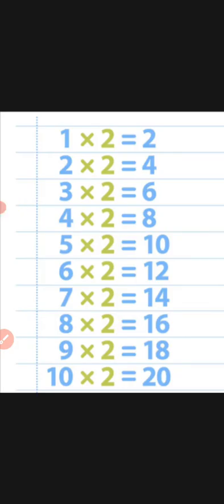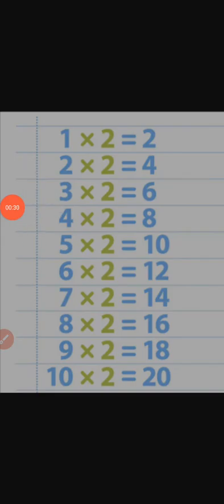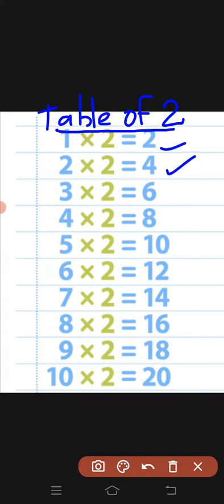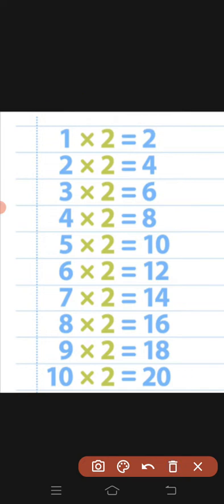First you have to write this table of two in your notebook with the heading table of two and try to memorize this table. One two is two, two twos are four, three twos are six, four twos are eight, five twos are ten, six twos are twelve.